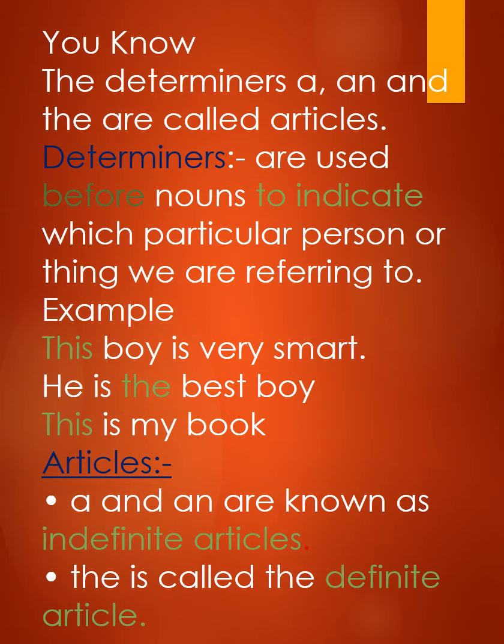Ab Interrogatives — ye bhi Determiners ke part hote hain. Jaise: what, which, whose. For example, 'What color do you like?' Yahan 'color' noun hai aur usse pahle 'what' aa raha hai, toh 'what' Determiner ho jayega. Toh isi tarah se jo hamare Determiners hote hain — A, An, and The — ye Articles kehlate hain.